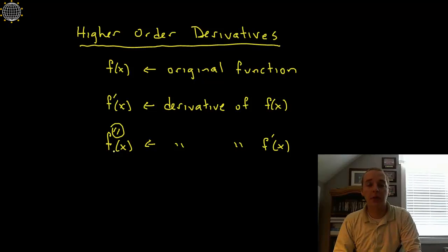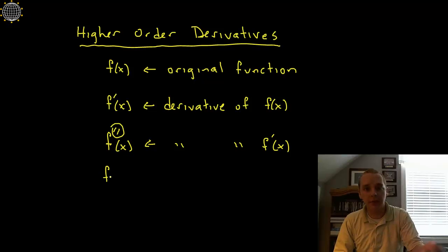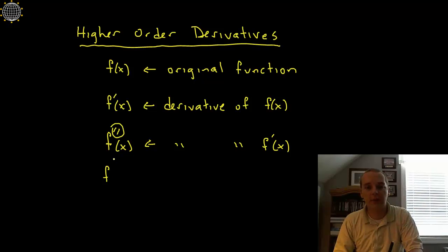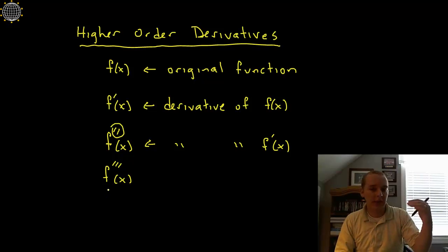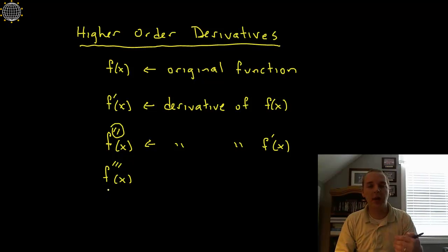F double prime is going to be a new function of x. In the same way, you can take another derivative and another and another if you wanted to keep going — the algebra is not very difficult at all. If you want to take a third derivative, you would write f triple prime.